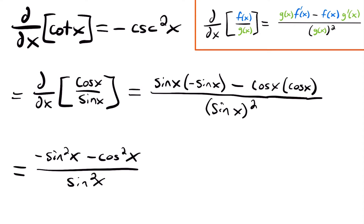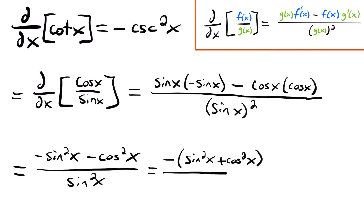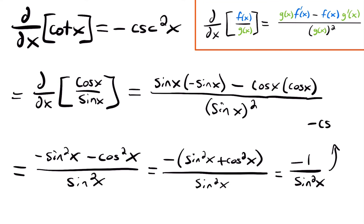Now this part can be a little tricky — how do we simplify further? Well, one of our trig identities is that sine squared x plus cosine squared x equals 1. In this case we have negative sine squared x minus cosine squared x, but if we pull out that negative, we would have our identity. So we'll have negative times the quantity sine squared x plus cosine squared x divided by sine squared x. That gives us negative 1 divided by sine squared x. And since cosecant x equals 1 over sine x, this can be rewritten as negative cosecant squared x. That's how we prove that the derivative of cotangent x equals negative cosecant squared x.